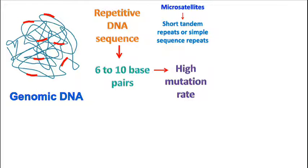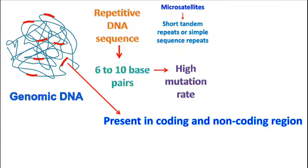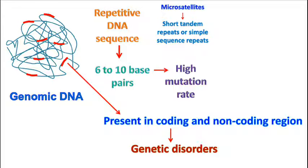In case of eukaryotes, the microsatellites can be present in coding as well as non-coding regions of the genome. Any mutation in the microsatellite present in the coding region can give rise to genetic disorders.